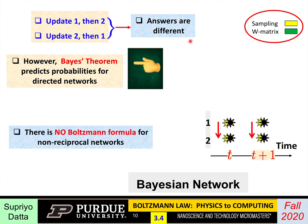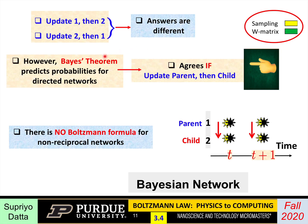What do we compare these answers to? We don't have Boltzmann to compare to — so which answer do we prefer? Well, there is Bayes' theorem that allows you to predict the probabilities for directed networks. And the answer you get will match Bayes' theorem if you update in the order of parent to child. In Bayesian networks you can identify parent nodes that are not influenced by anything, and child nodes influenced by their parents. The correct way of sampling, if you want results that agree with Bayes' theorem — which generally describes phenomena in the real world very well — is to update first the parent, then the child.